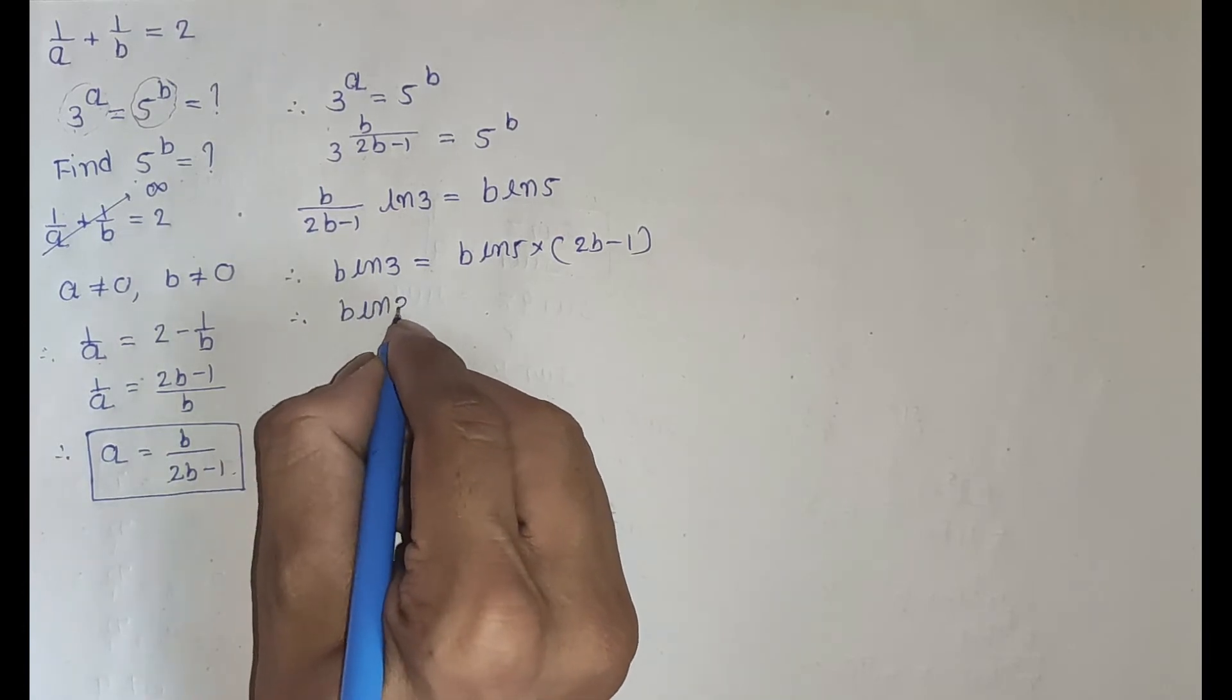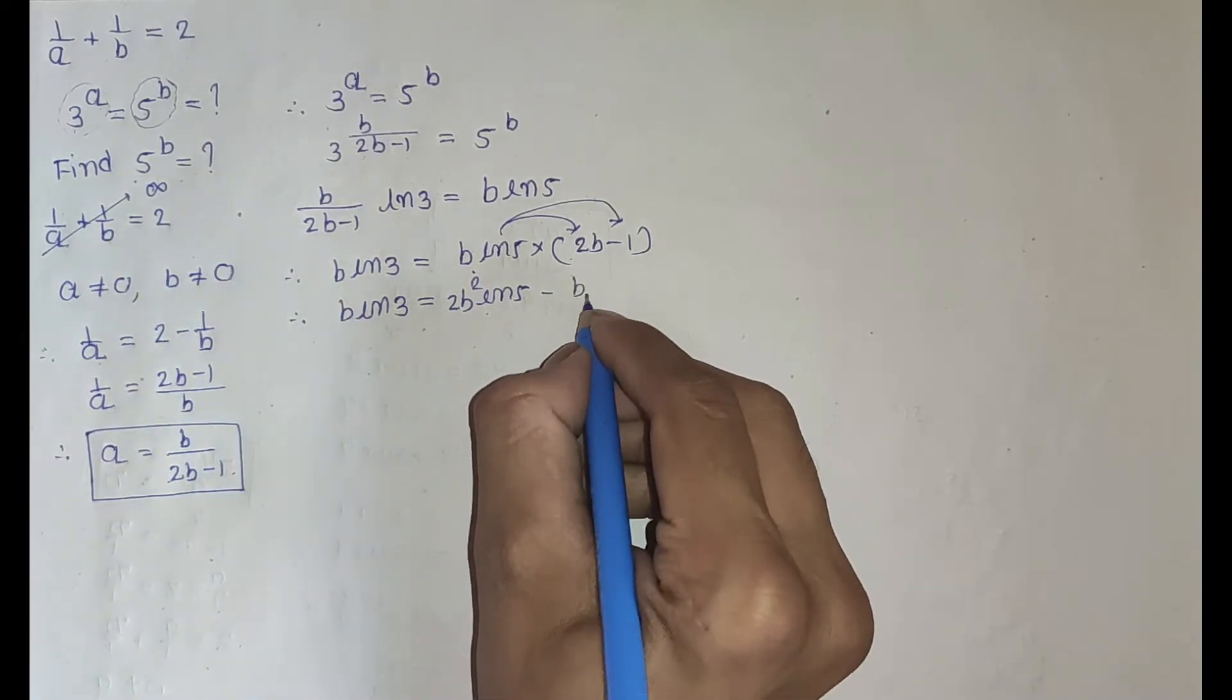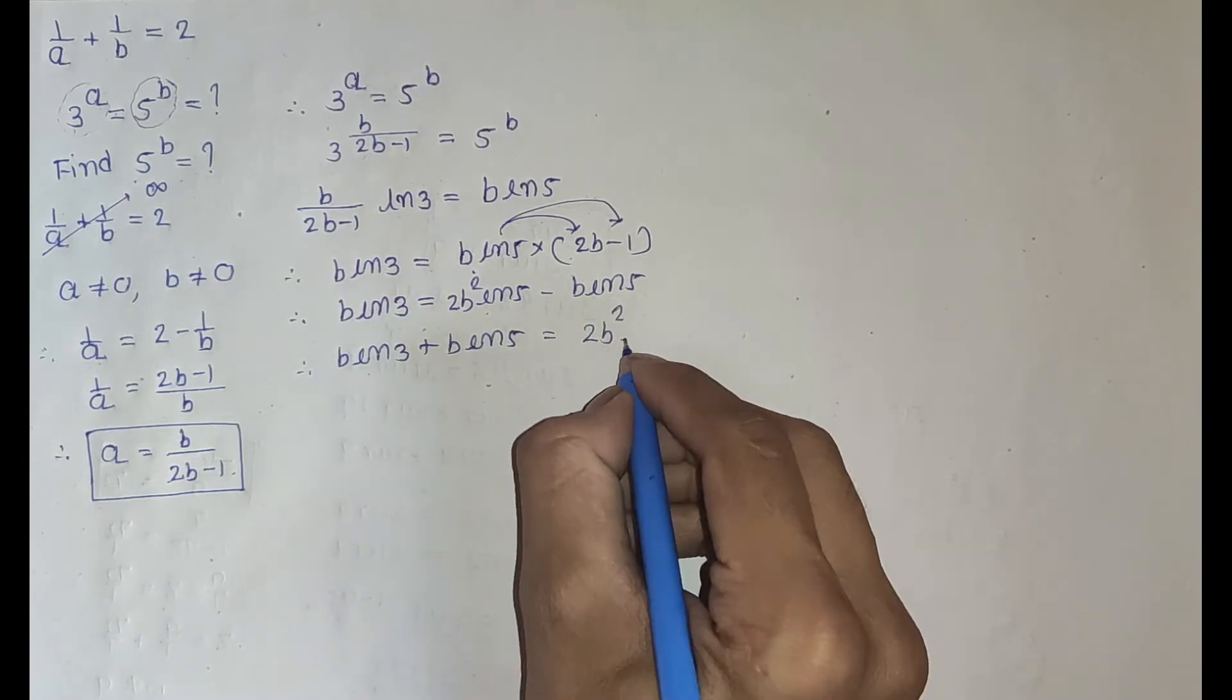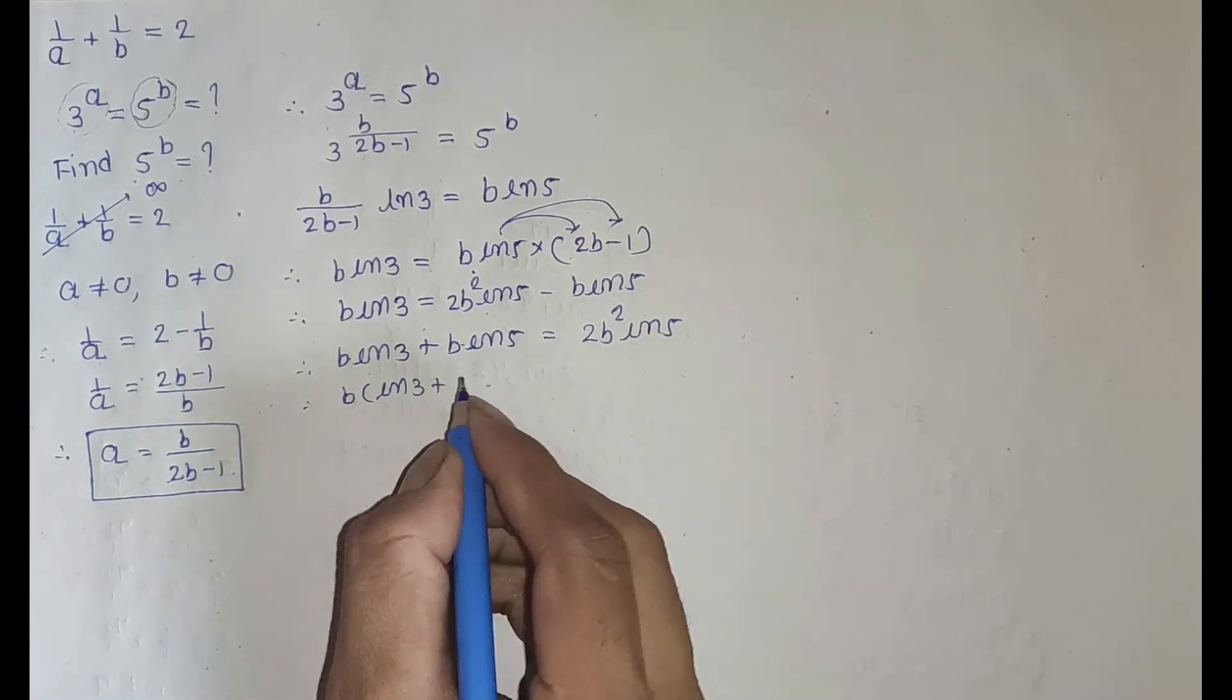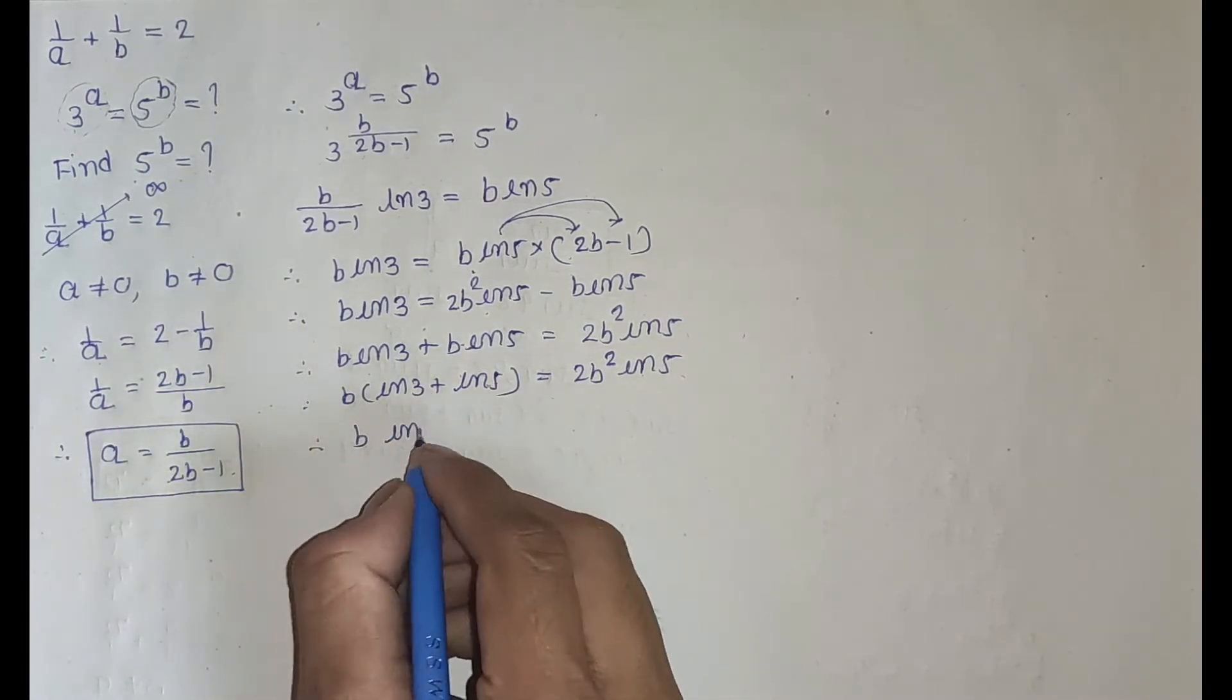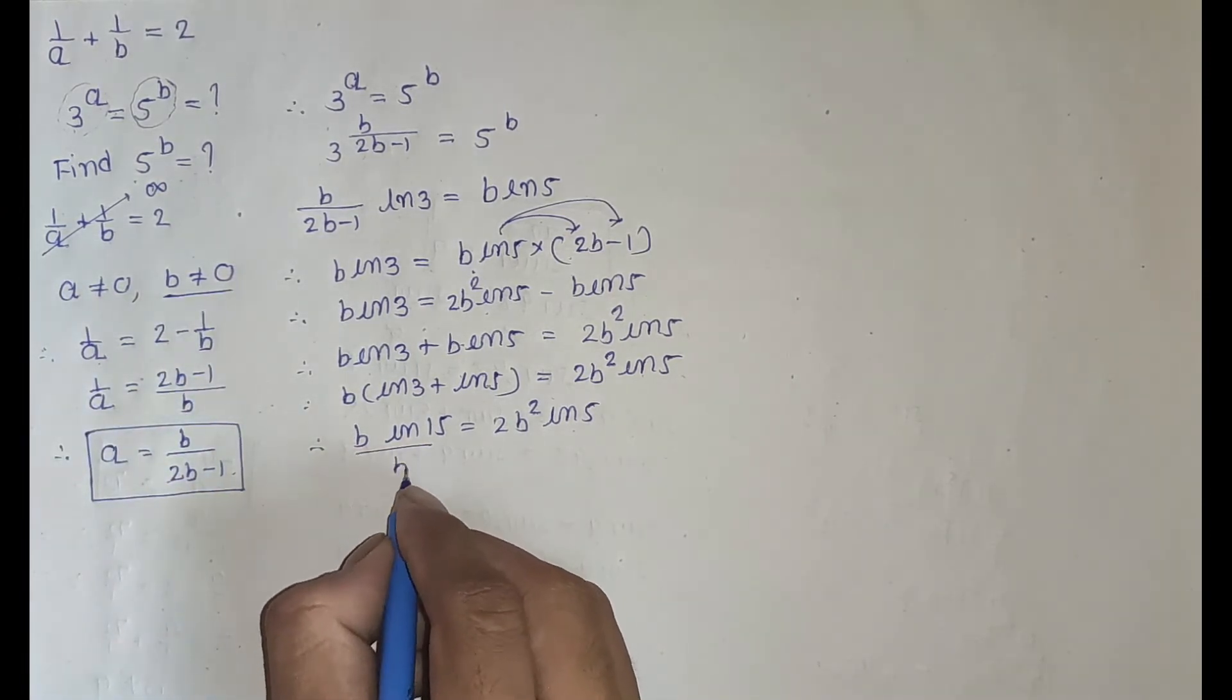b ln 3 equal to b ln 5 times 2b minus 1. b ln 3 plus b ln 5 equal to 2b ln 5. Take b common: b times ln 3 plus ln 5 equal to 2b ln 5. Here given b is not equal to 0, that's why I divide both sides by b.